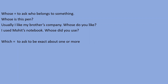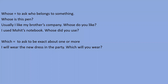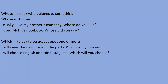Which is used to be exact about one or more options. For example, 'I will wear the new dress in the party — which will you wear?' — I want to be exact about your dress. Another example: 'I will choose English and Hindi subjects — which will you choose?' — I want to be exact about your choice. So which is used when we need exactness.